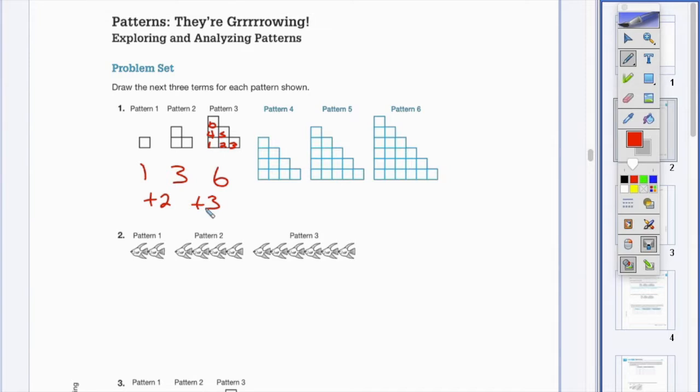Four. Okay, so this should be ten, right? Let's see: one, two, three, four, five, six, seven, eight, nine, ten.